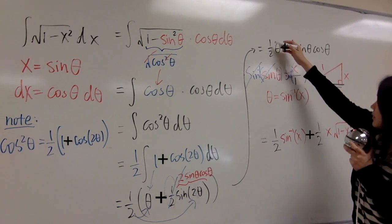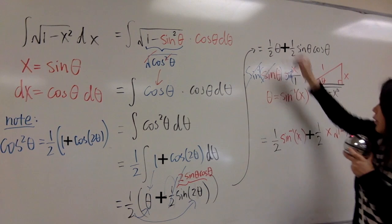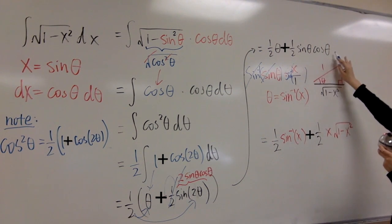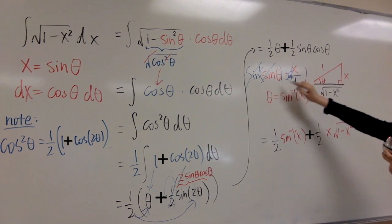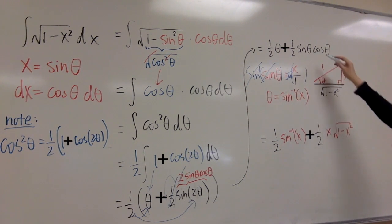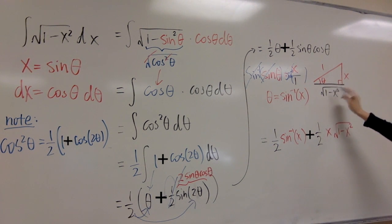And then your theta equals to arc sine x, so now this one is 1 over 2 arc sine x, and the rest here, sine theta is x, what we set here, sine theta is x, and cosine theta, you look at here, is square root of 1 minus x squared over 1.